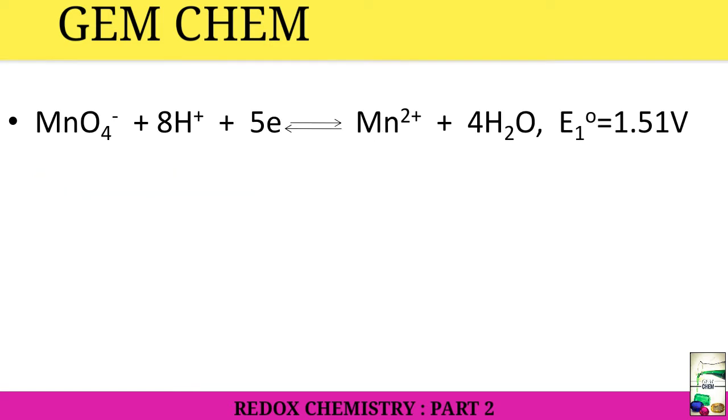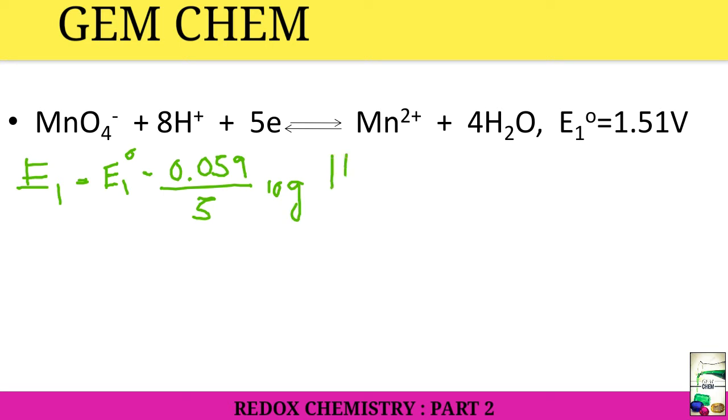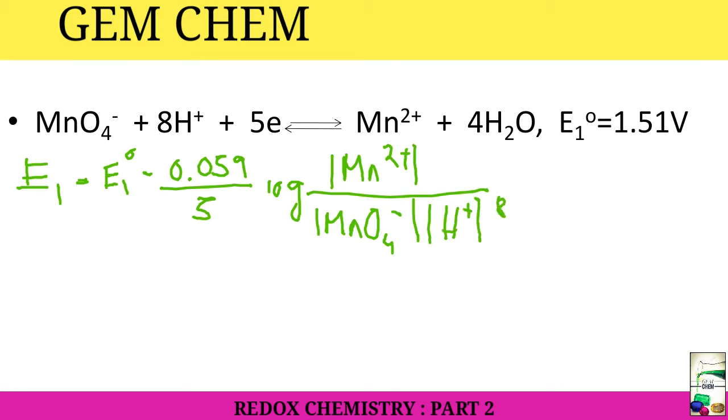Now we will go for another one, that is MnO4⁻. Here there is a donation of electrons, so this is a reduction process. What we get here is E₁ = E₁⁰ minus 0.059 divided by 5, log [Mn²⁺]/[MnO4⁻][H⁺]⁸. Here we are writing the product part and here the reactant part.